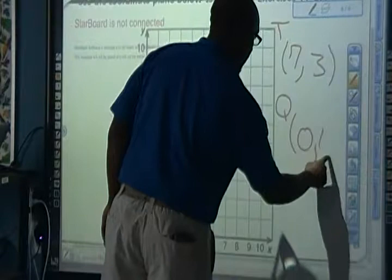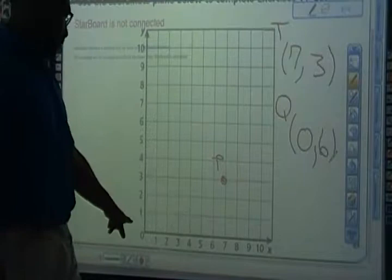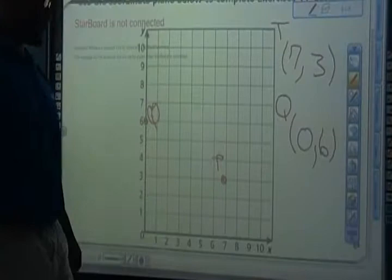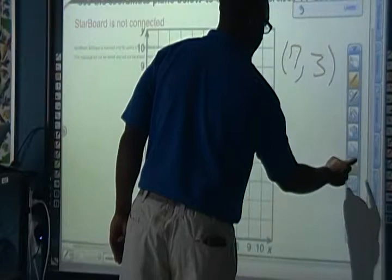Or they'll say, how about for Q, let's give you 0, 6. Well, if it's 0 for my x-axis, that means I don't go over any, but I go up on my y-axis only. So that would be 0, 6, and that's Q.